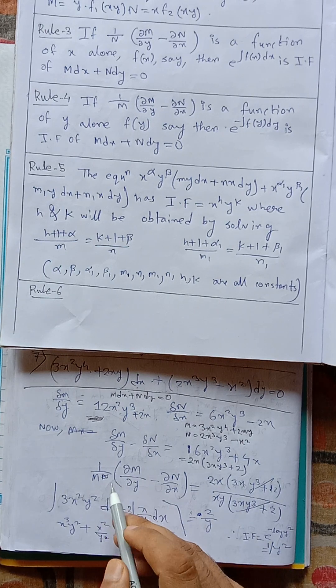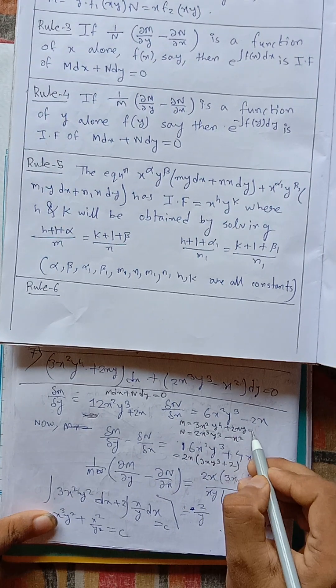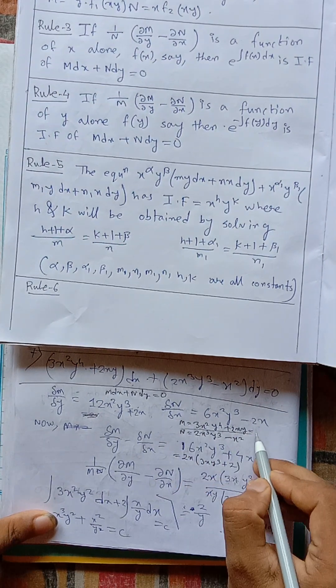We use 1 by m. And we are taking common from m, xy.